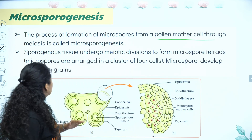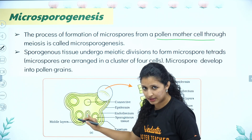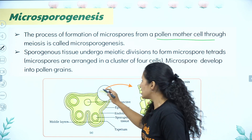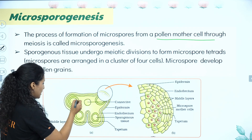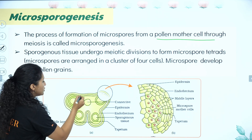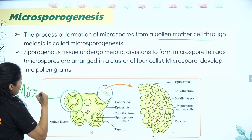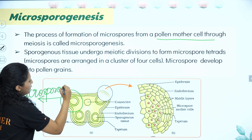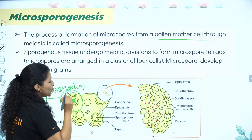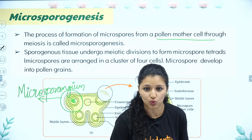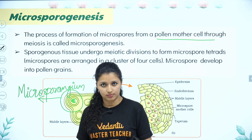So we have the Microsporangium — these are pollen sacs. Inside the Microsporangium, in the innermost layer, you have something called sporogenous tissue. Under sporogenous tissue, the process of Microsporogenesis begins.